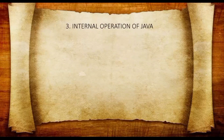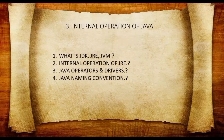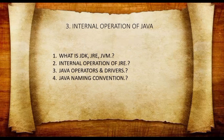Next comes internal operations of Java. When you download a Java compiler, there are some software components automatically installed. Those are JDK (Java Development Kit), JRE (Java Runtime Environment), and JVM (Java Virtual Machine). It's better to know what JDK, JRE, and JVM are — this is a commonly and importantly asked question. Also know the internal operation of JRE: how exactly a Java source code is converted into binary code understandable by the computer.